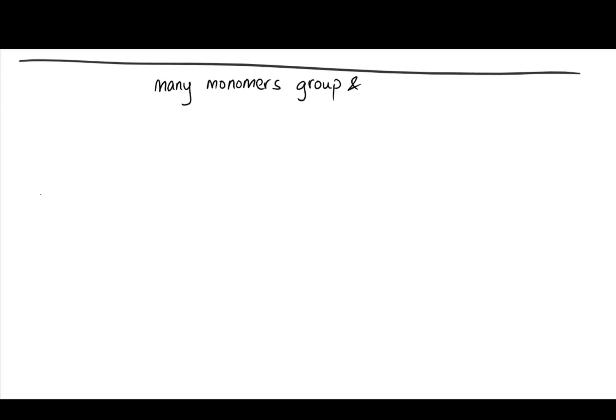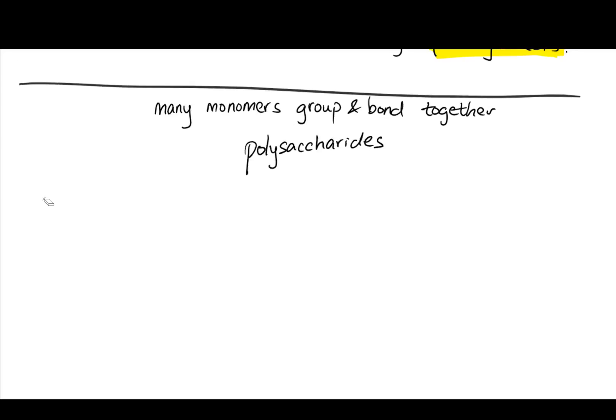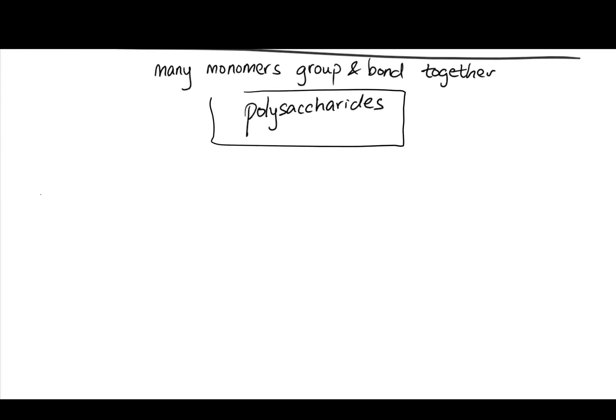If you have many monomers, they group together and through bonding, the covalent bond, right? They group together through bond. Now you have a polymer. The polymer of sugar is what we call polysaccharides. Many sugars bonded together.